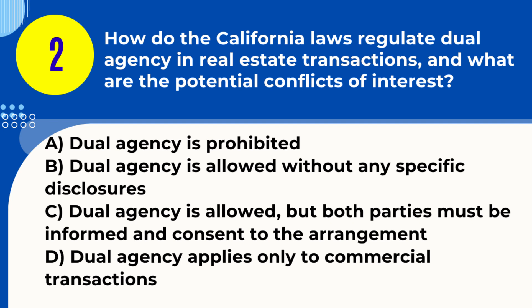Answer: C. Dual agency is allowed, but both parties must be informed and consent to the arrangement. Explanation: In California, dual agency is legal, but it requires full disclosure and informed consent from both the buyer and seller due to potential conflicts of interest.